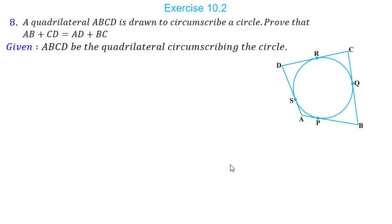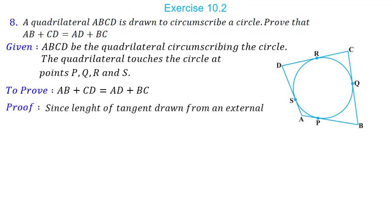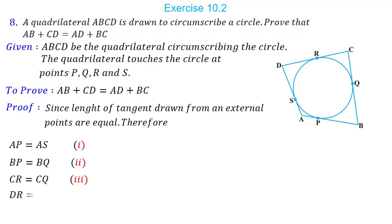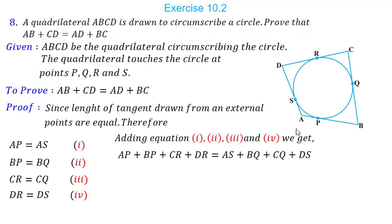Given: quadrilateral ABCD circumscribes the circle, touching it at points P, Q, R, S. We have to prove AB + CD = AD + BC. Since tangent lengths from an external point are equal: AP = AS, BP = BQ, CR = CQ, DR = DS. Adding all four: AP + BP + CR + DR = AS + BQ + CQ + DS. So AB + CD = AD + BC. Hence proved.